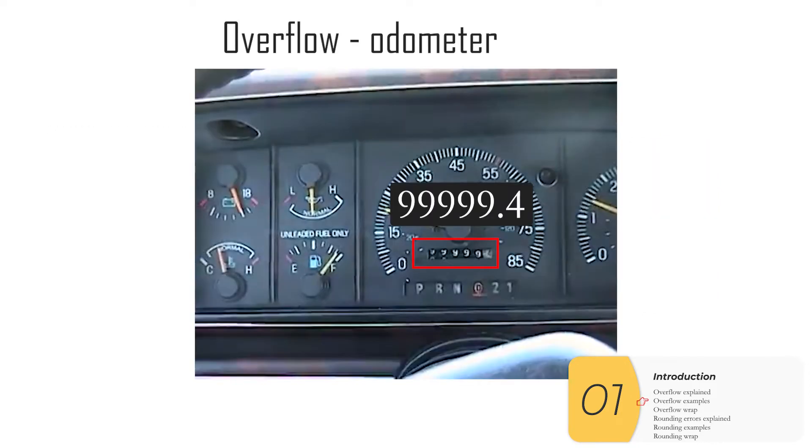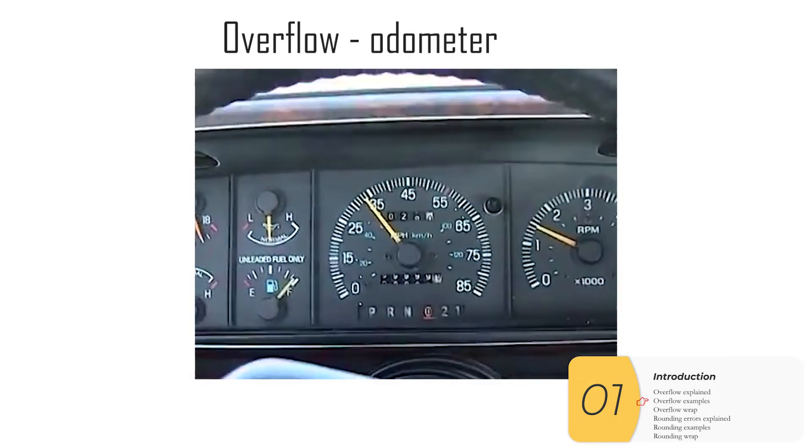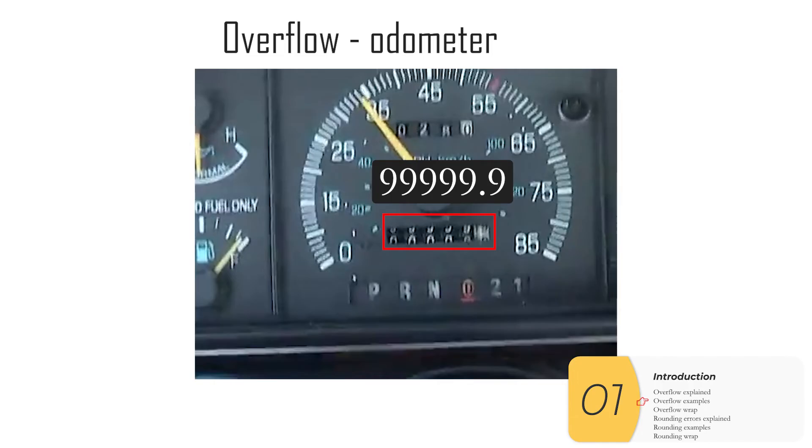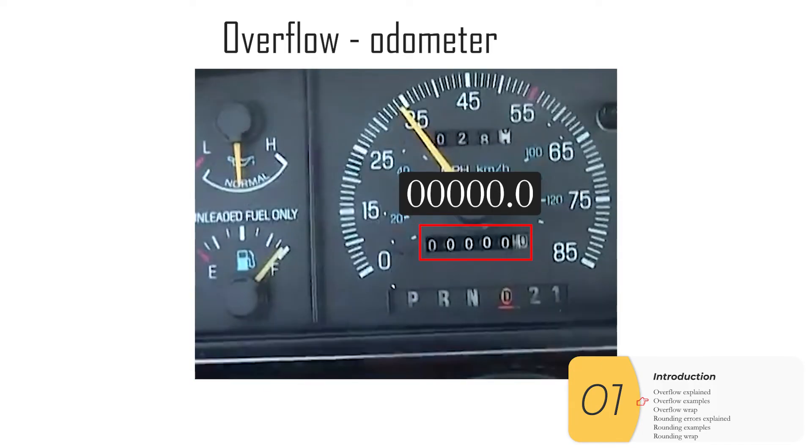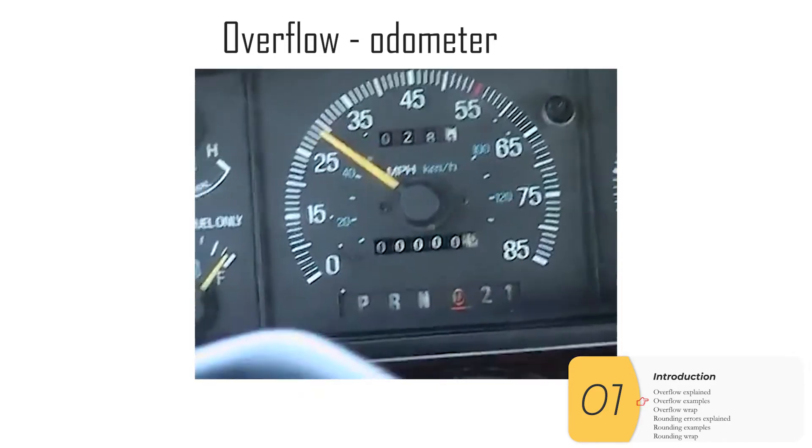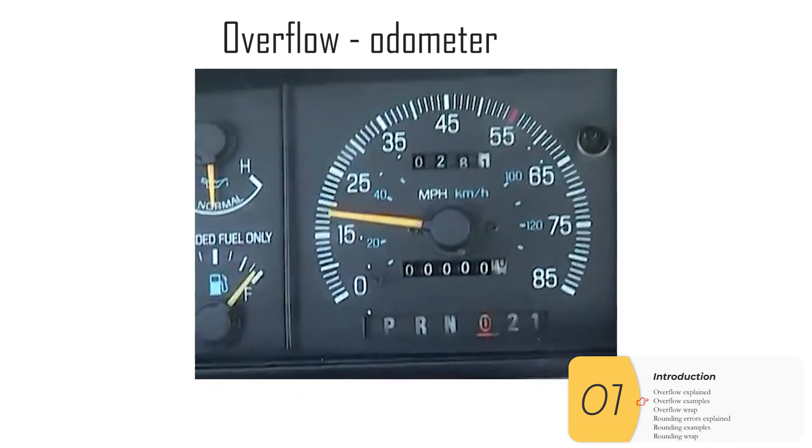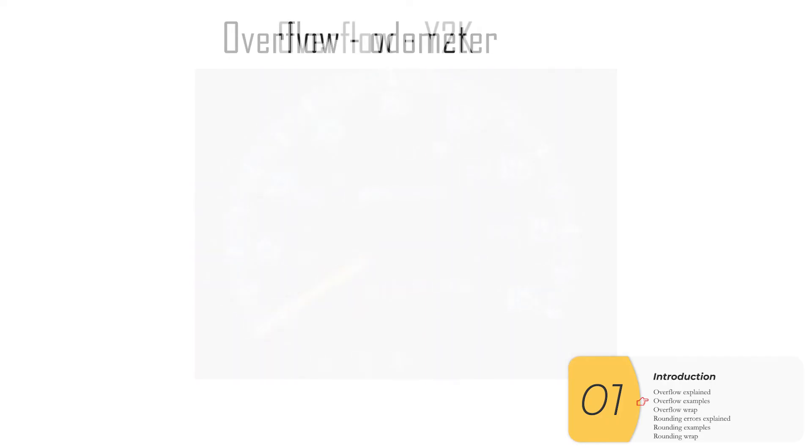So the classic example of overflow is old cars. Here's an odometer, which has gone 9999.4 miles. They drive some more and it goes to 9999.9 miles. And finally, when they drive some more, it resets all the way back to zero. This doesn't happen anymore like this.